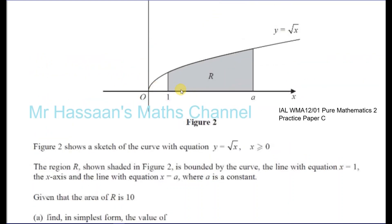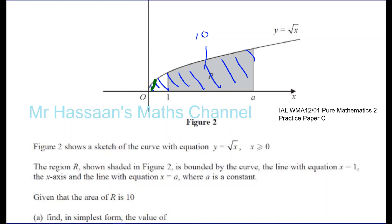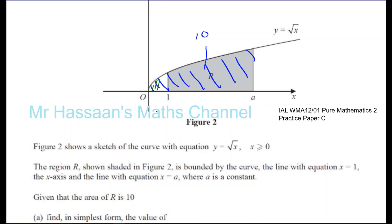Now we've got to find the area from 0 all the way across. I know this part has an area of 10, so what I need to do is find the area of this additional part over here and add it to 10.